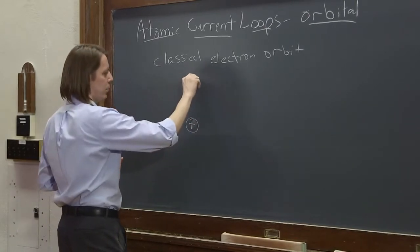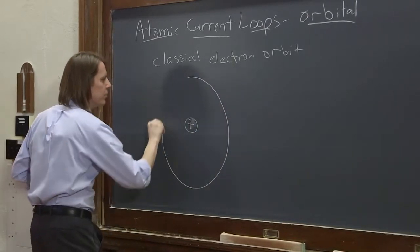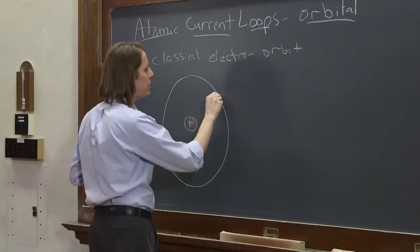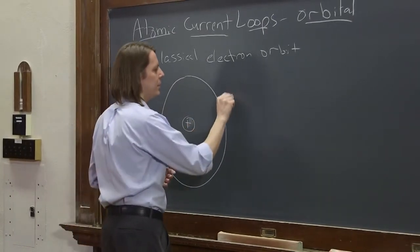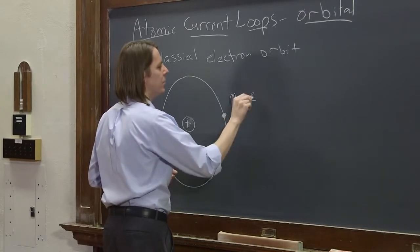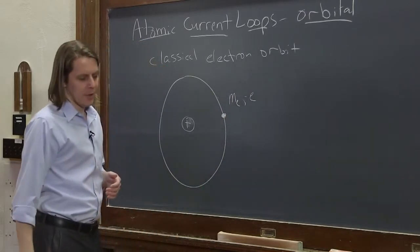one electron going around in a circle in a simple orbit, you can imagine the electron is here. We know it has a mass me, a charge of minus e.